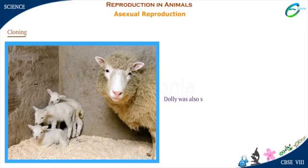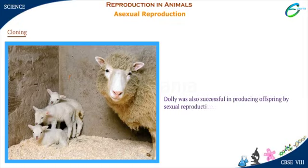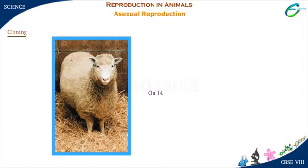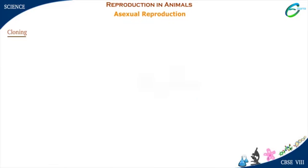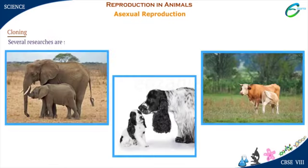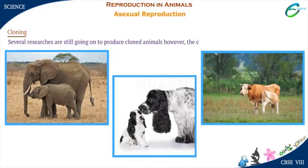Dolly looked exactly like the Fin Dorset sheep. Dolly was also successful in producing offspring by sexual reproduction. On 14th February 2003, Dolly died due to a lung disease. Several researchers are still working to produce cloned animals; however, the cloned animals born are observed to have certain abnormalities.